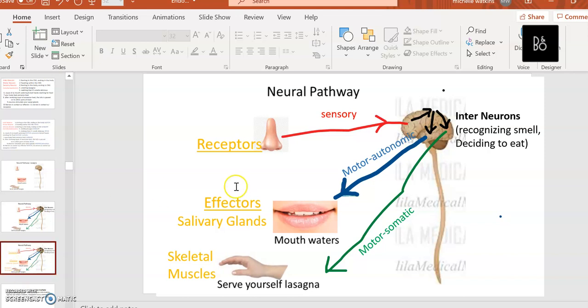Receptors, in this case smell receptors in your nose, carry the message along sensory nerves which arrive at the CNS. Inside the CNS, interneurons process the information, recognizing what the smell is, deciding what to do about it, recognizing whether you enjoy it or dislike it.